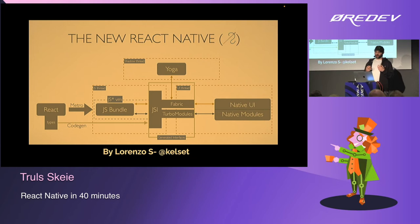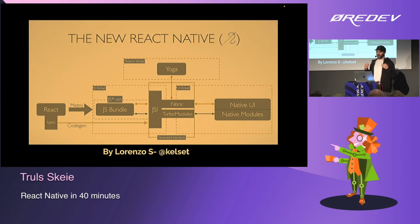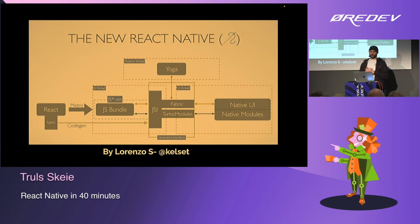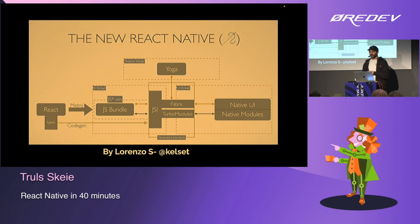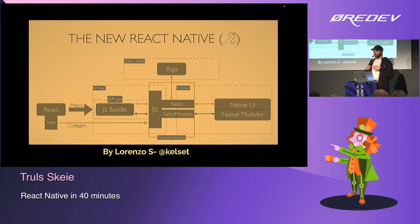Now you can have a priority queue — React can tell the native side what to optimize. You can also lazy load native modules. One of the benefits of React Native is also one of its disadvantages: it's actually native. As a React Native developer you need to know JavaScript or TypeScript, but also Objective-C, Kotlin, Java, or Swift.